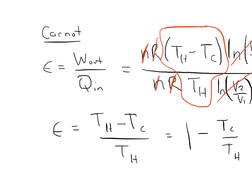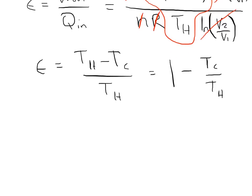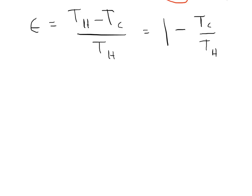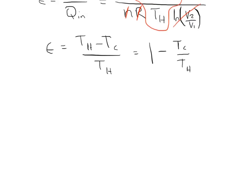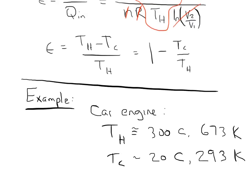So, let's work through an example. The specific example that we're going to do is a car engine. Imagine that a car engine is a Carnot heat engine. And it isn't exactly, but it's quite close. In a car, gasoline, when it combusts, produces a temperature of something like 300 Celsius, which is around 573 Kelvin.